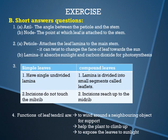First, under short answer questions, the first question is: define axle. Axle is the angle between the petiole and the stem. The next one is: define node. The node is the point at which the leaf is attached to the stem.